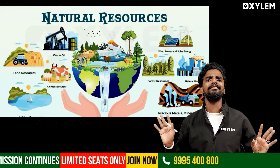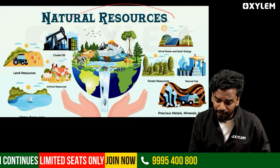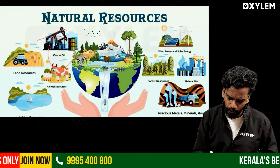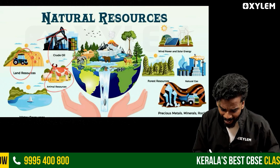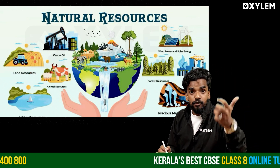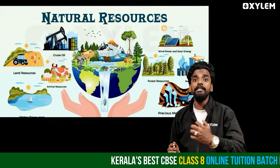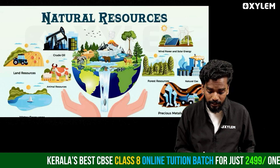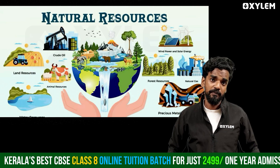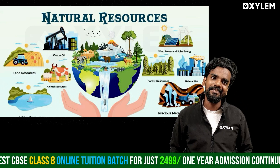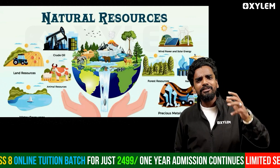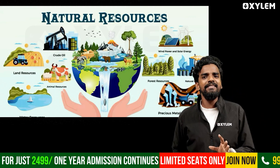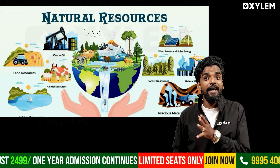Natural resources include crude oil, land resources, animal resources, water, solar energy, wind energy, forest resources, and all such things. We can also see land, ocean, water, and animals. All these things were created by nature — these are natural resources.